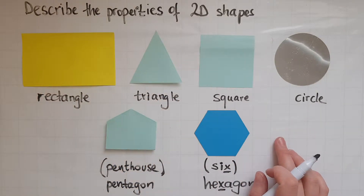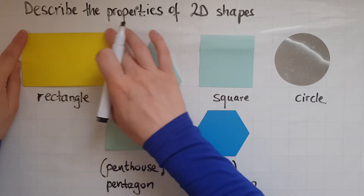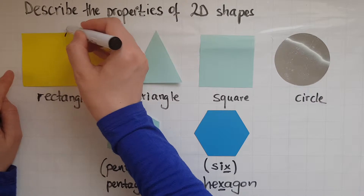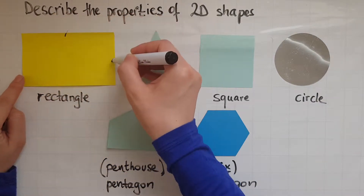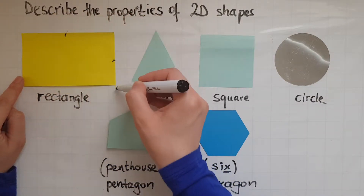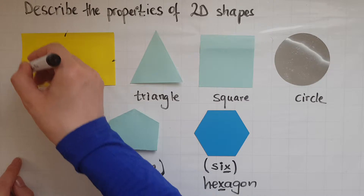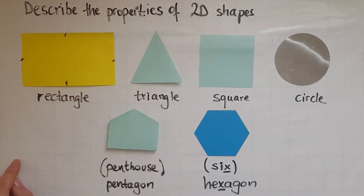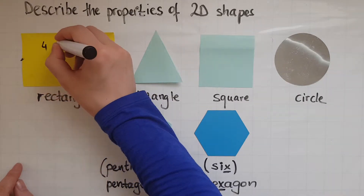So let's start with the rectangle. How many sides does this rectangle have? Well I can see one here, two, three and four. So it has four sides.